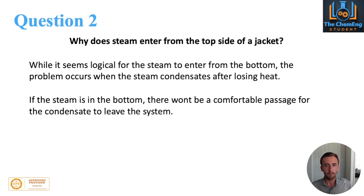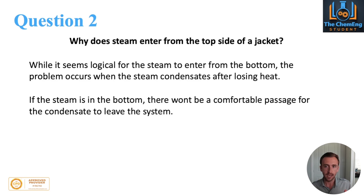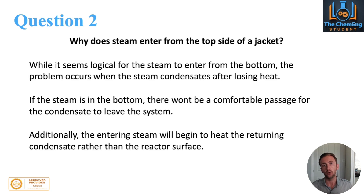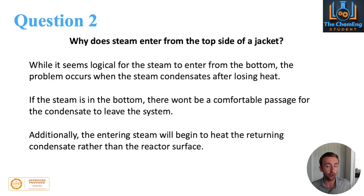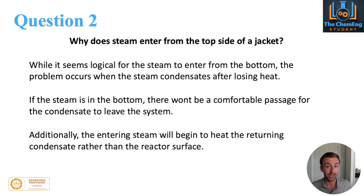The general principle is that the steam that rises will suspend some of the condensate, which would prevent either the condensate leaving or the steam from reaching all the way to the top. That means the heat that the steam brings will actually be reheating the condensate rather than rising to the reactor surface, decreasing the efficiency of the jacket's function.